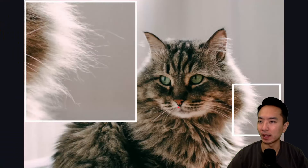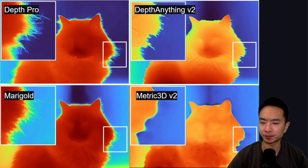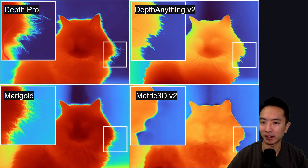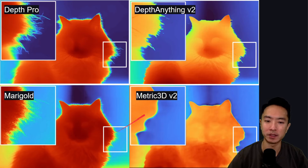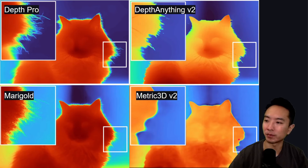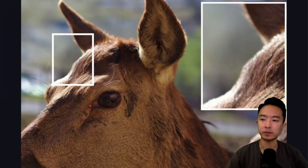Here's another example of a cat — notice the hair. Depth Pro captures all the fine details of the hair — very impressive. DepthAnything v2 kind of gets it but it's a little bit fuzzy. Marigold surprisingly does a little bit better compared to some other models. And Metric3D is just a big blob — it doesn't capture anything at all.